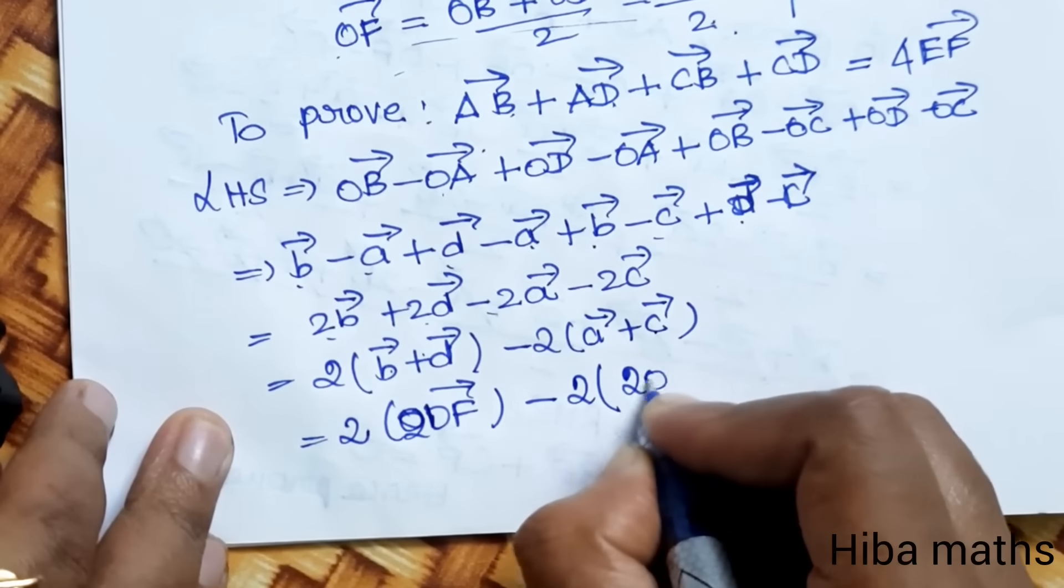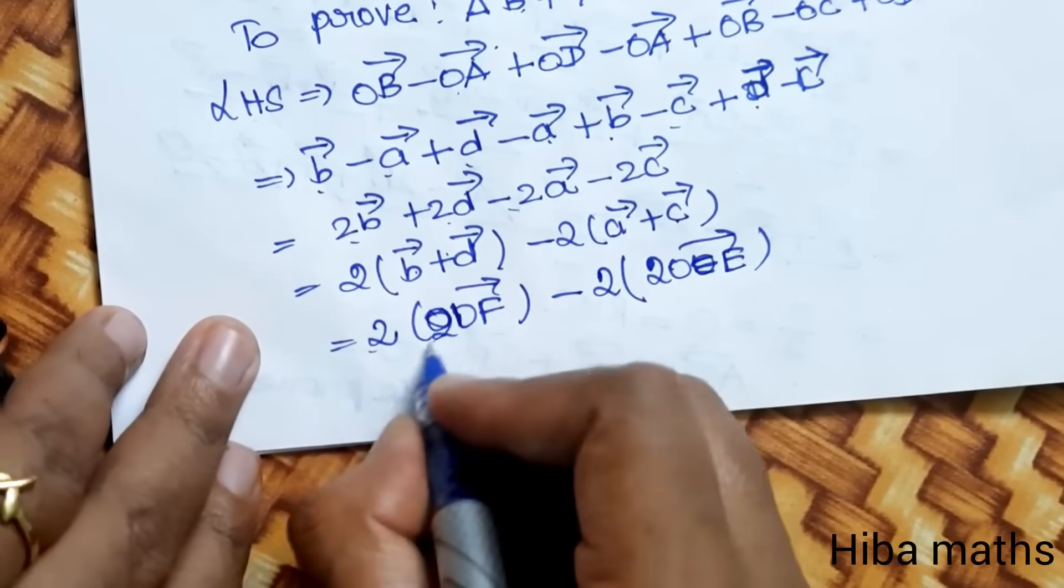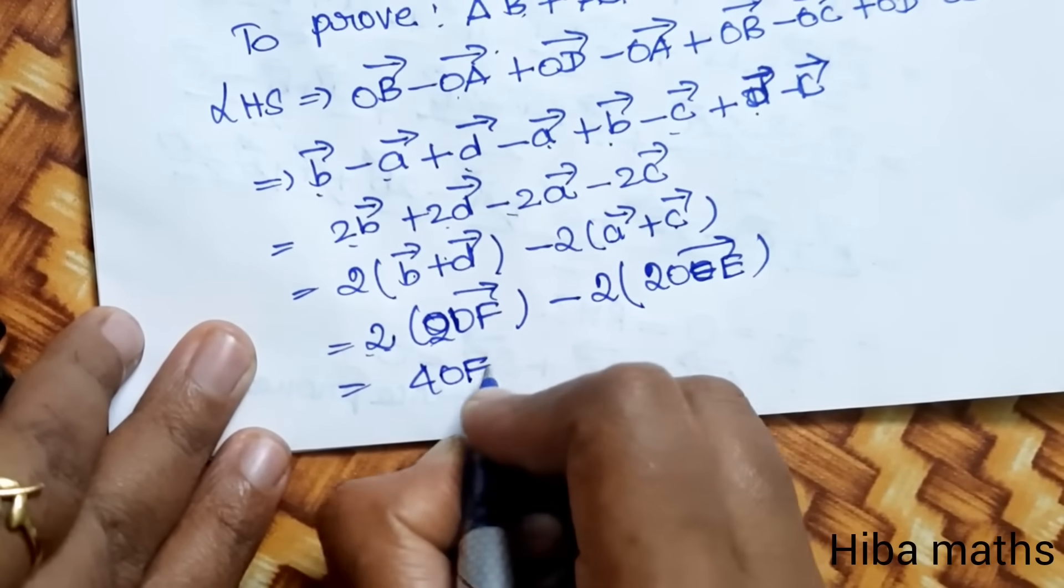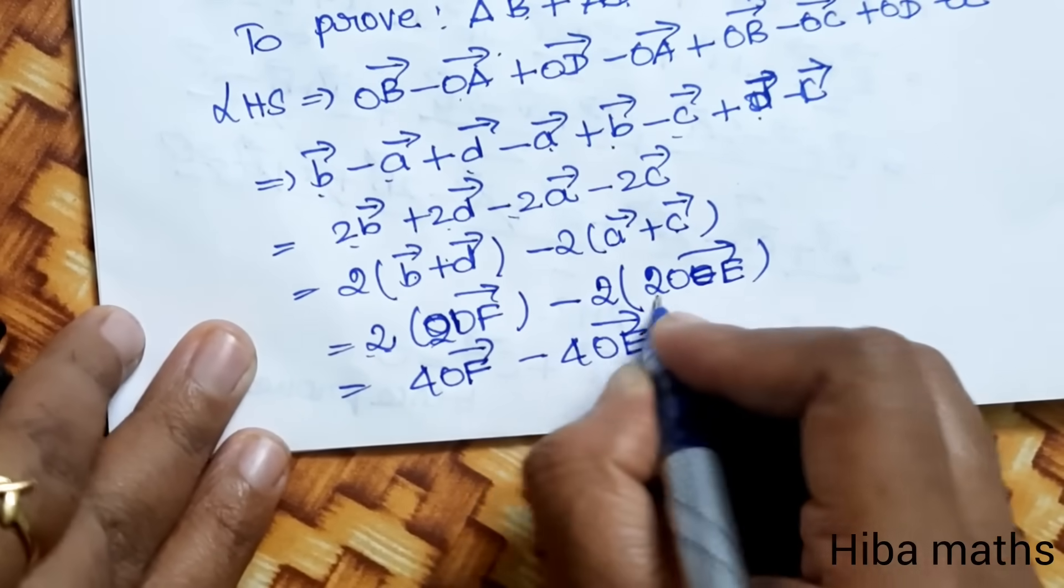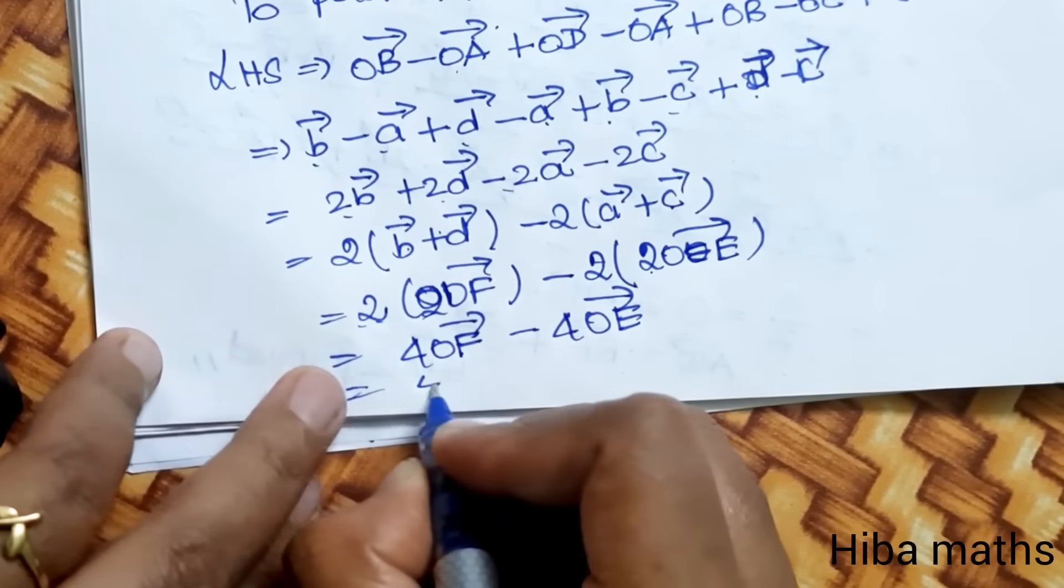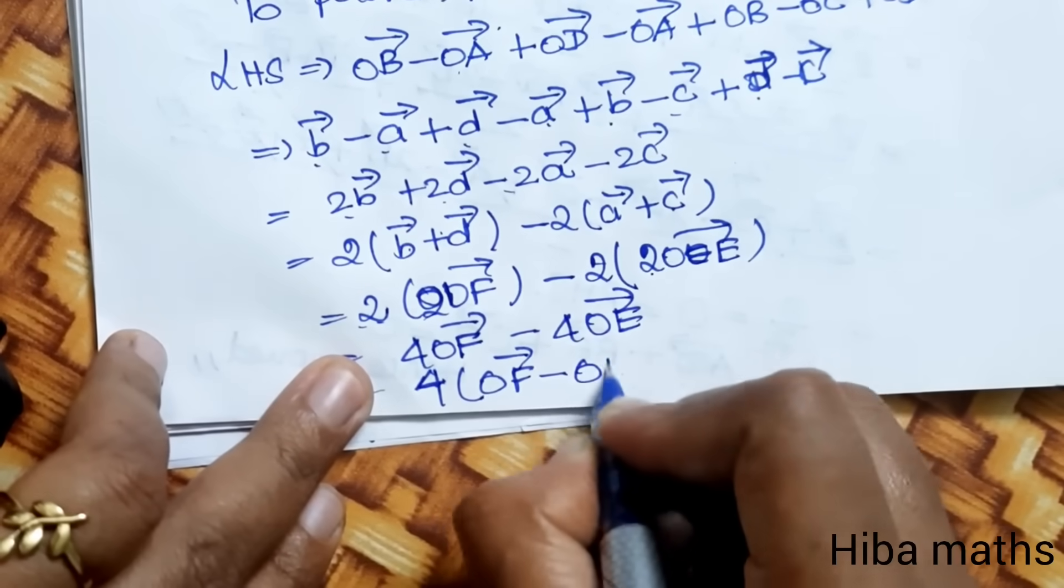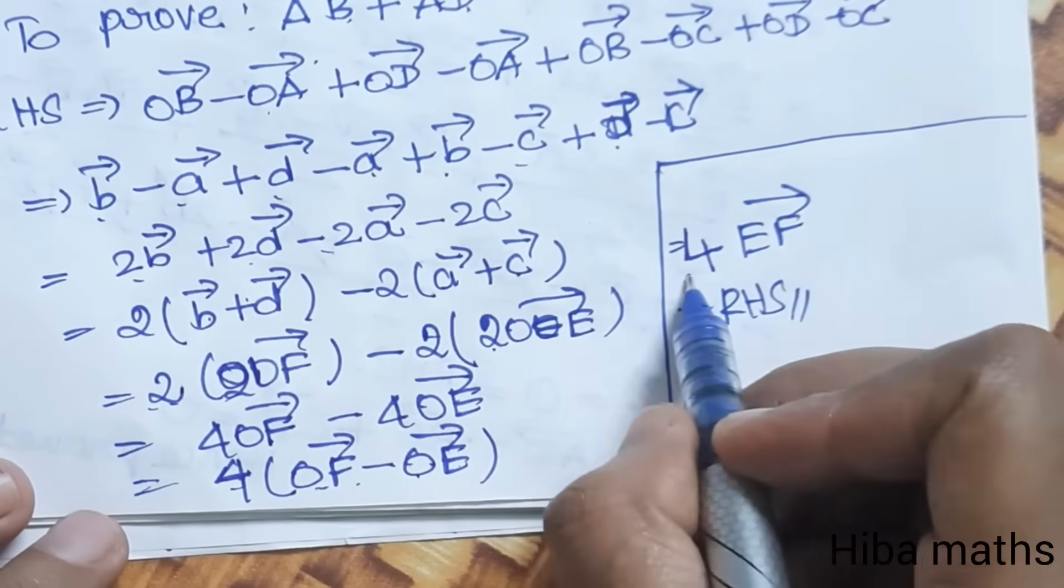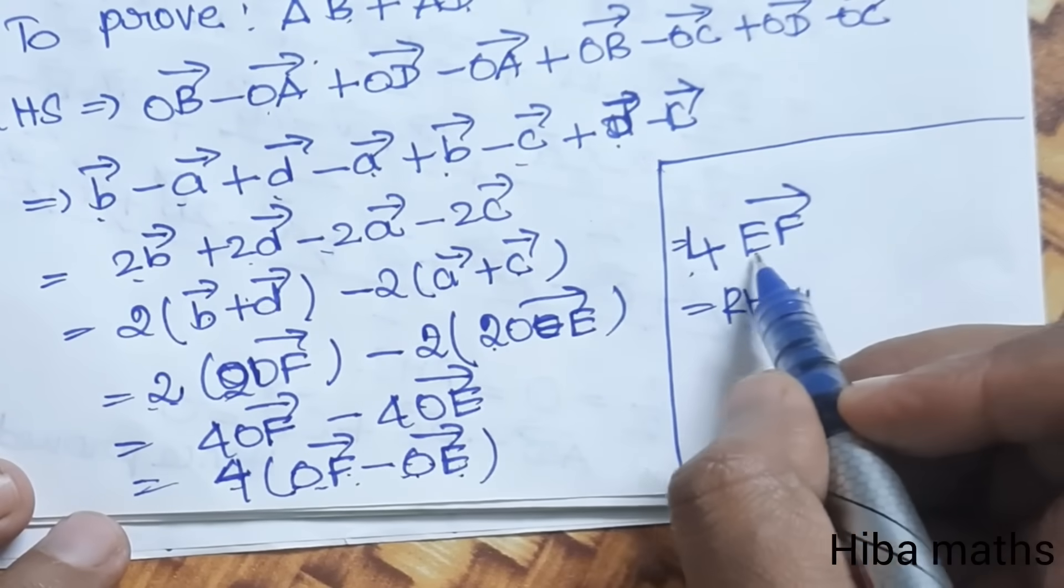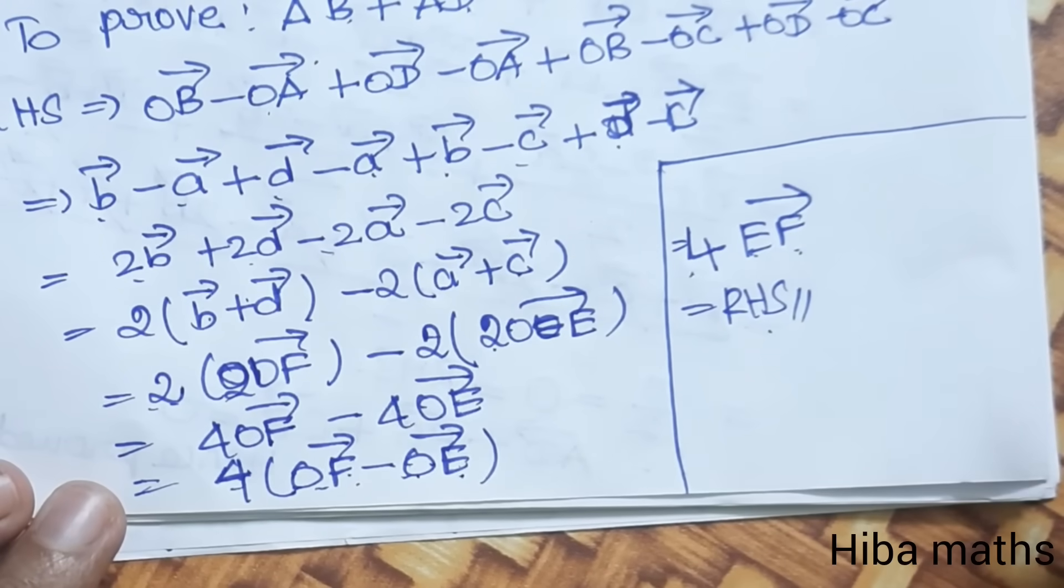Therefore we have 2 times 2 times OF vector minus 2 times 2 times OE vector. That's 4 times OF minus OE, which equals 4 times EF vector, which is our RHS. Thank you so much for watching.